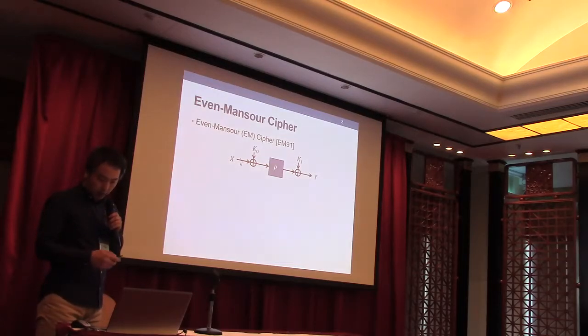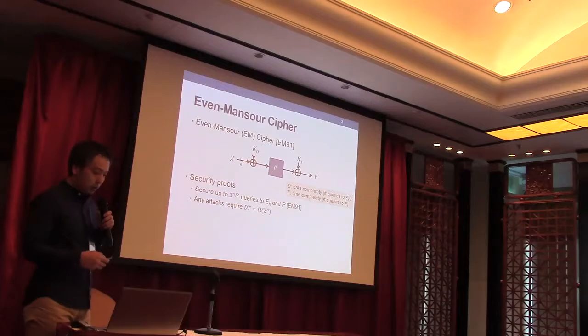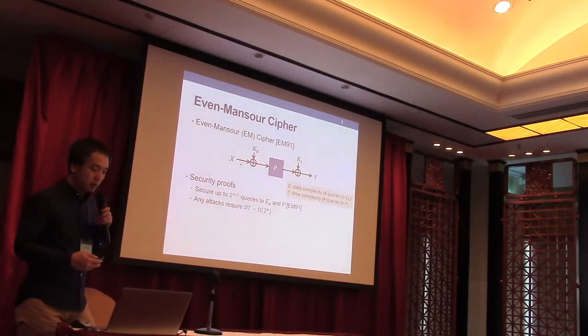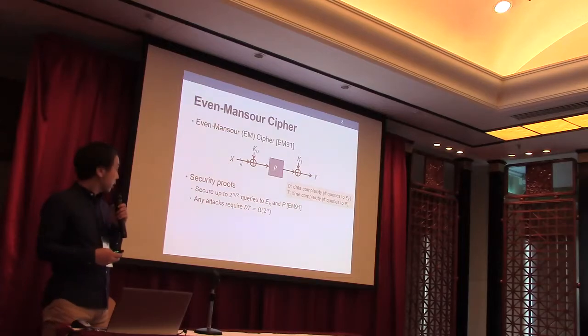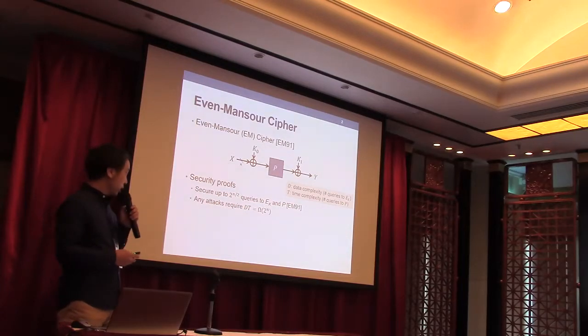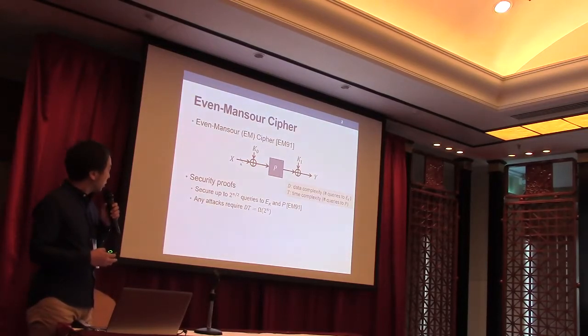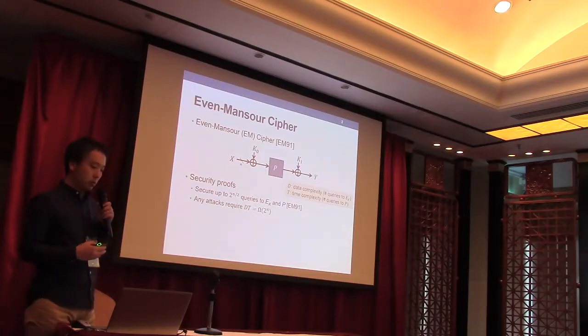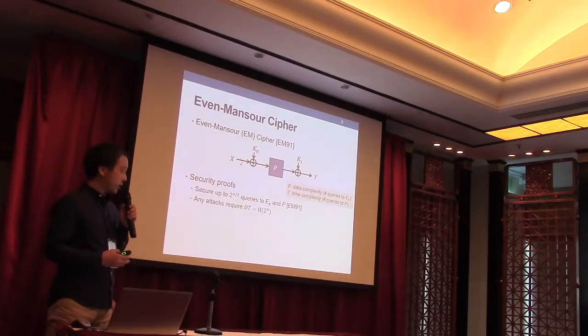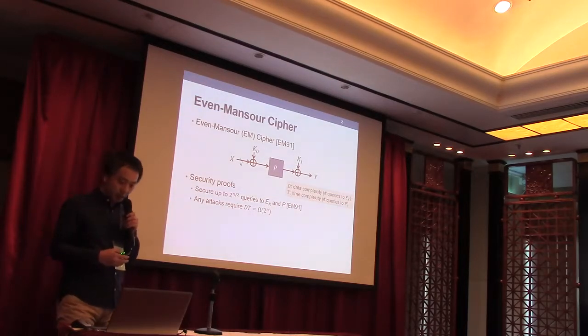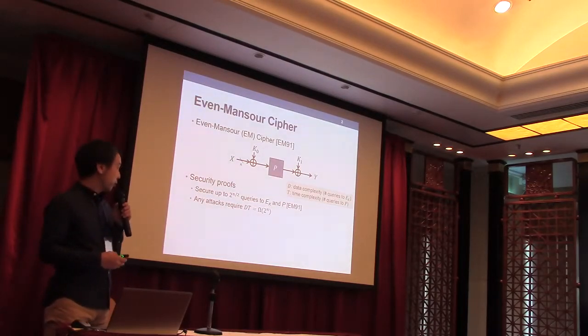For the one-round Even-Mansour Cipher, Even and Mansour showed that any attacks require at least DT, where T is data complexity, which equals the number of queries to the encryption oracle, and T is time complexity, which equals the number of queries to the internal permutation key.